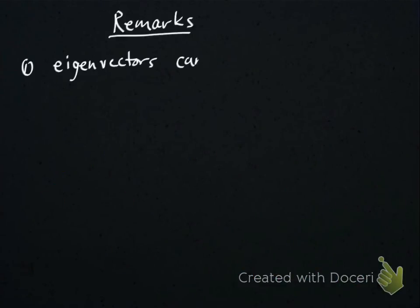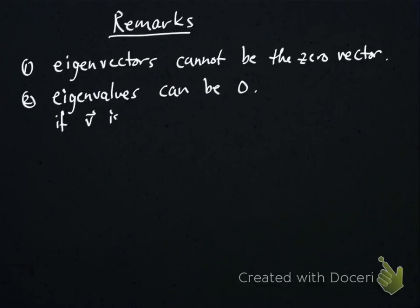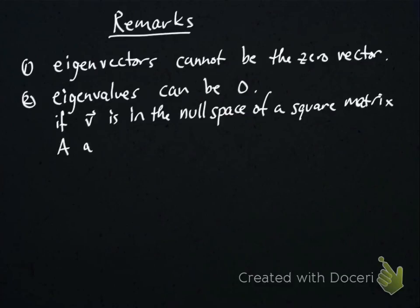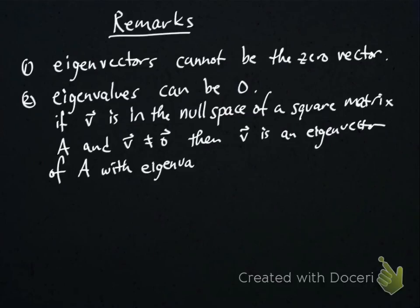Now a few remarks before we finish up here. One, eigenvectors by definition cannot be the 0 vector. That said, eigenvalues are allowed to be 0. So any vector V that's in the null space of a square matrix, if V is not 0, then V is going to be an eigenvector of A with eigenvalue equal to 0.